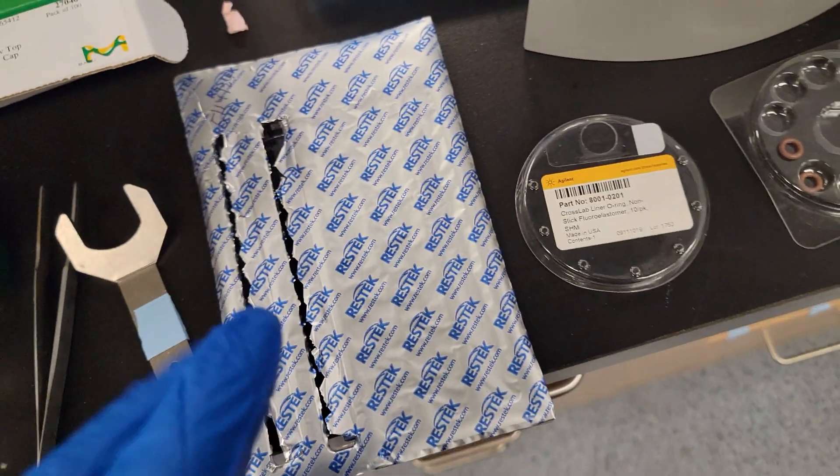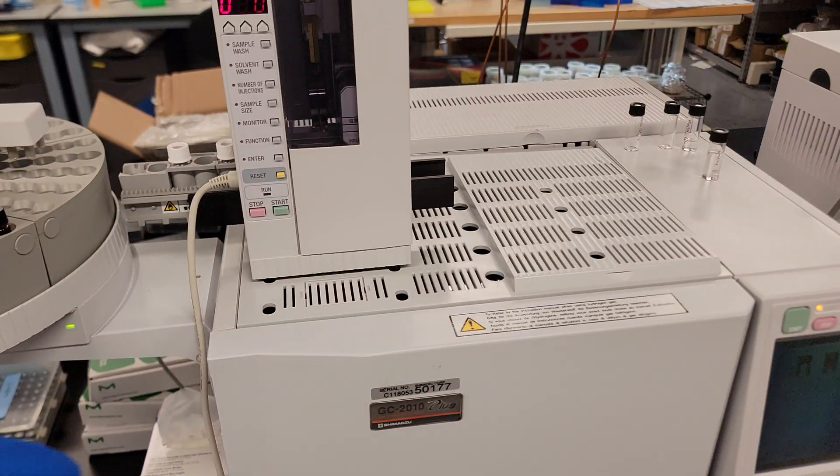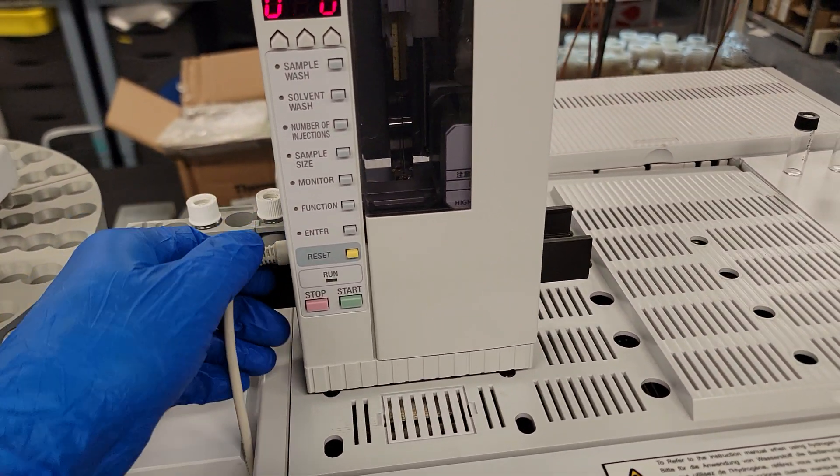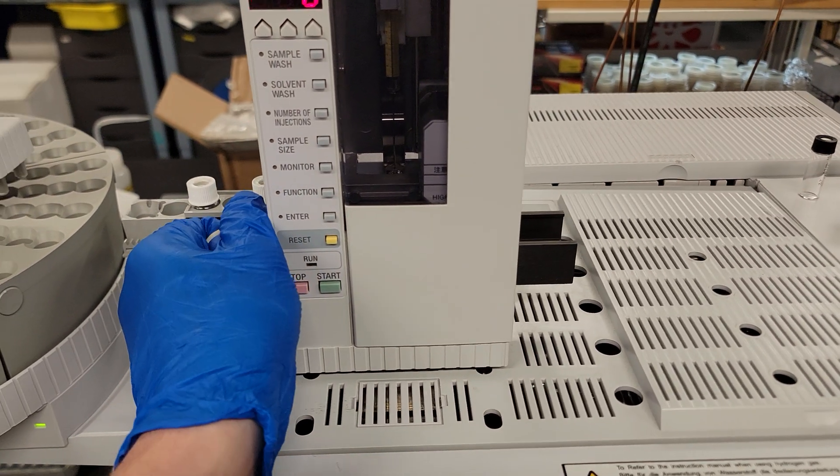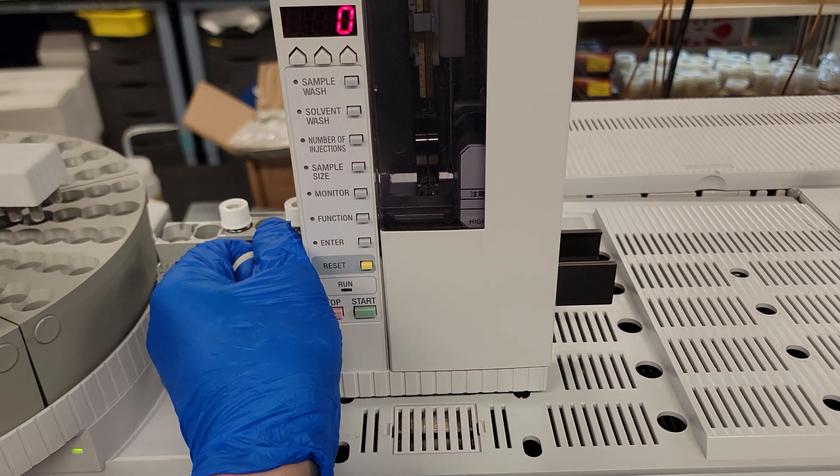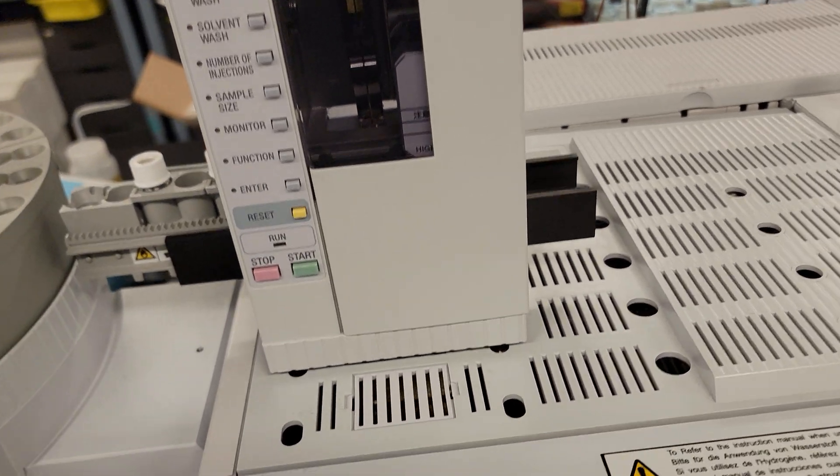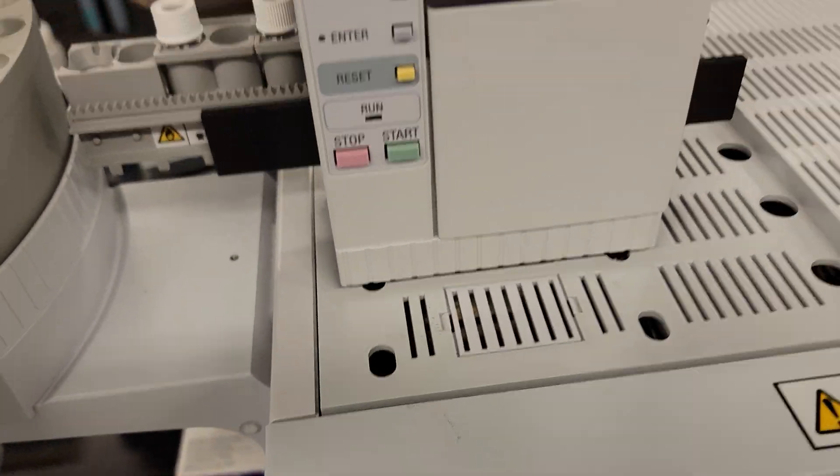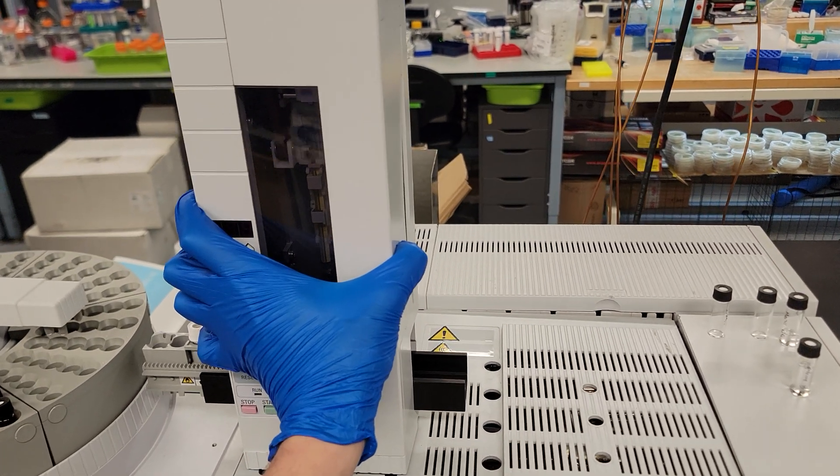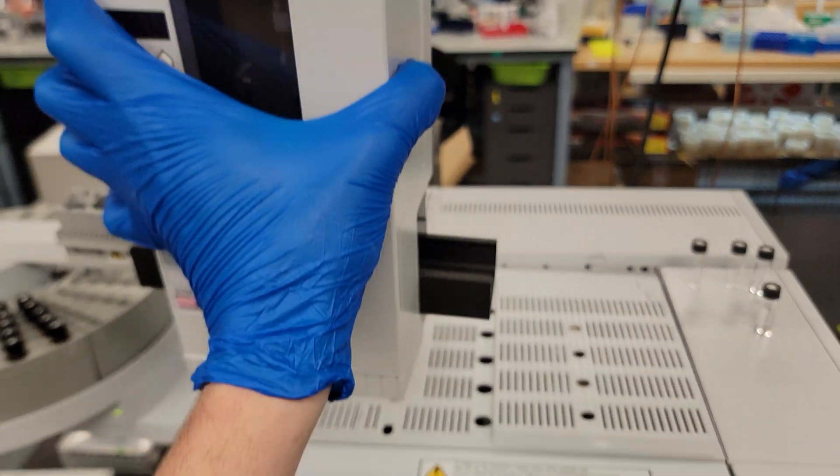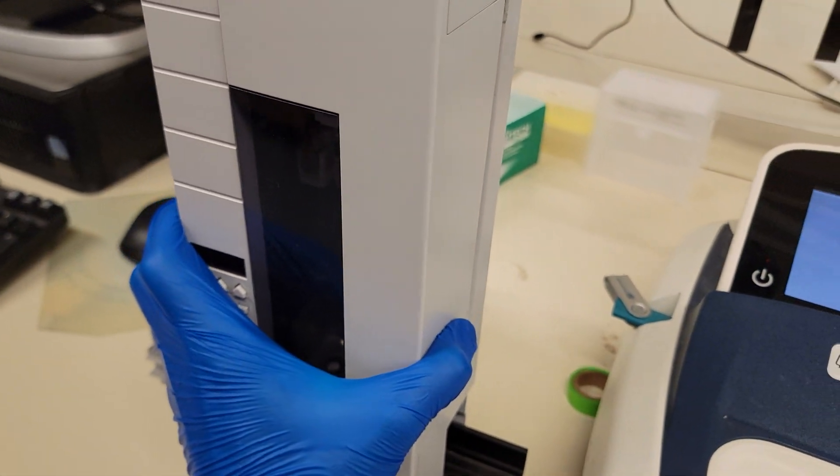We're going to replace the o-ring on the new topaz liner. This is really simple, only takes about five minutes, but you should pump down the GC for about 20 minutes after you do this, minimum. I'm just going to unplug the auto sampler, and then the whole auto sampler just lifts straight off. I'm going to very gently set this down.